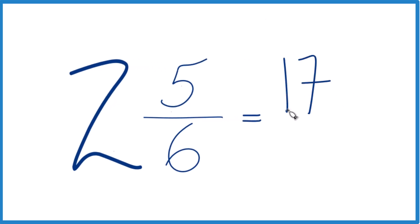So that's going to be our numerator. Then we just bring the denominator across, and the mixed number 2 and 5/6 equals the improper fraction 17/6.